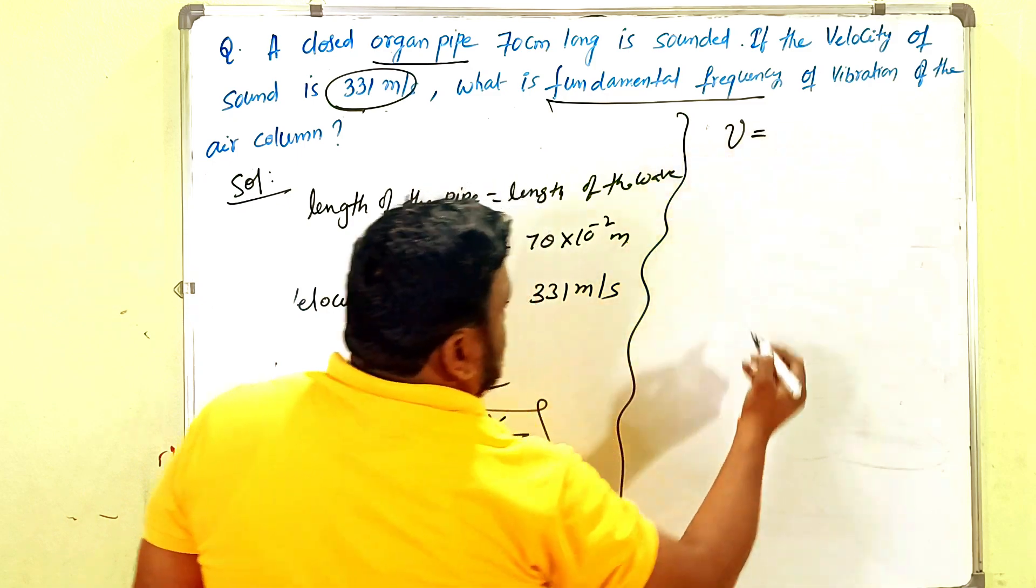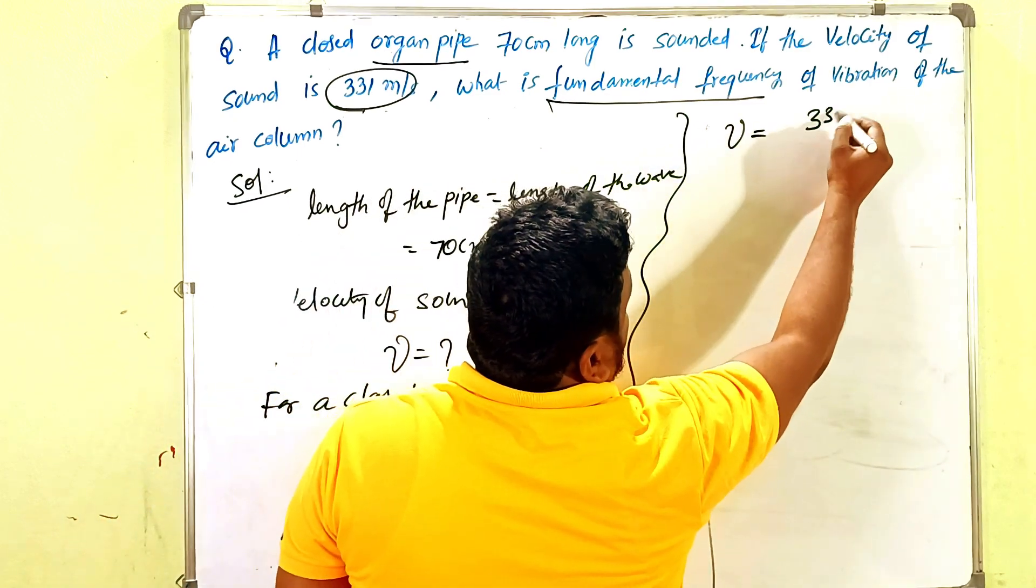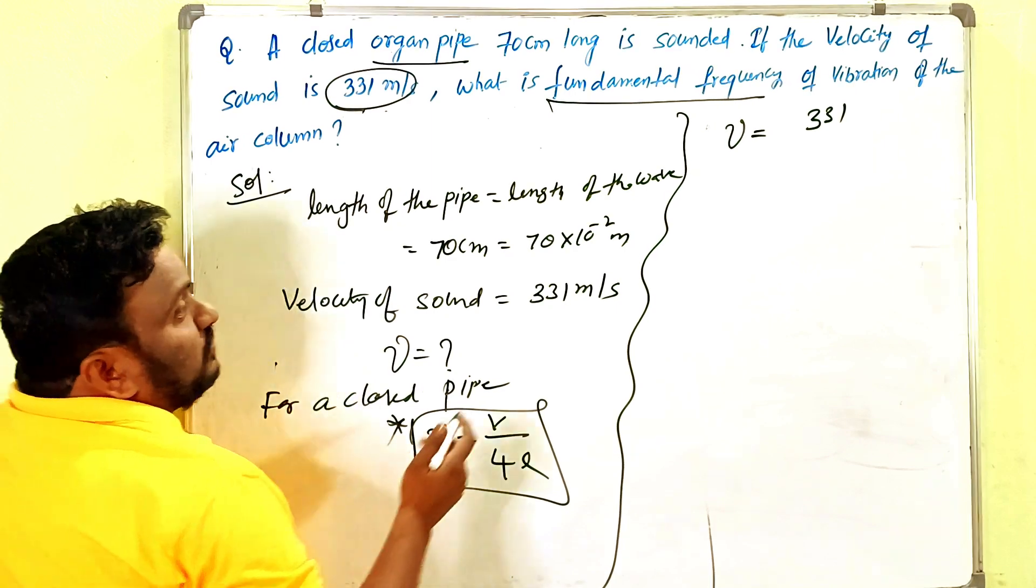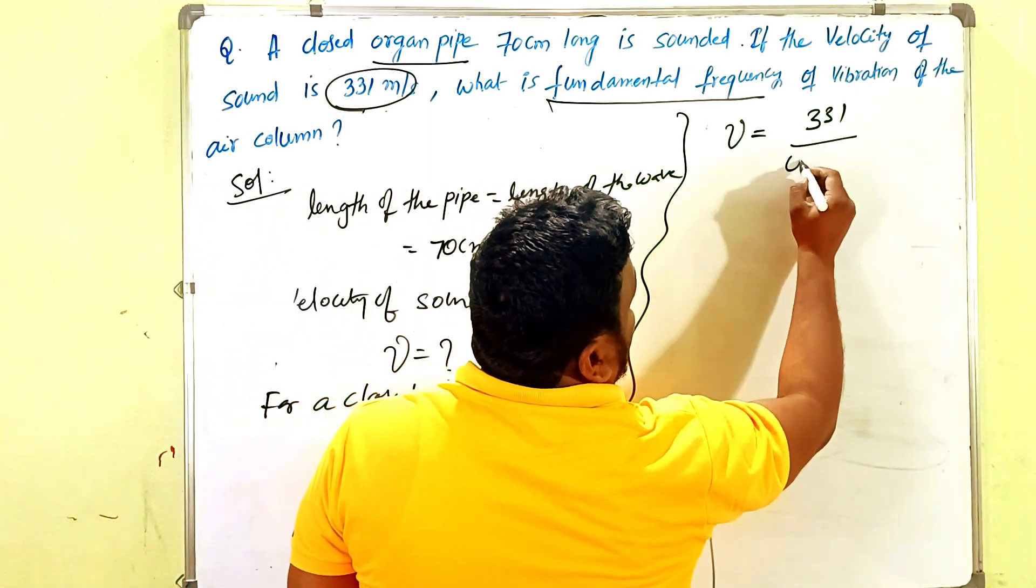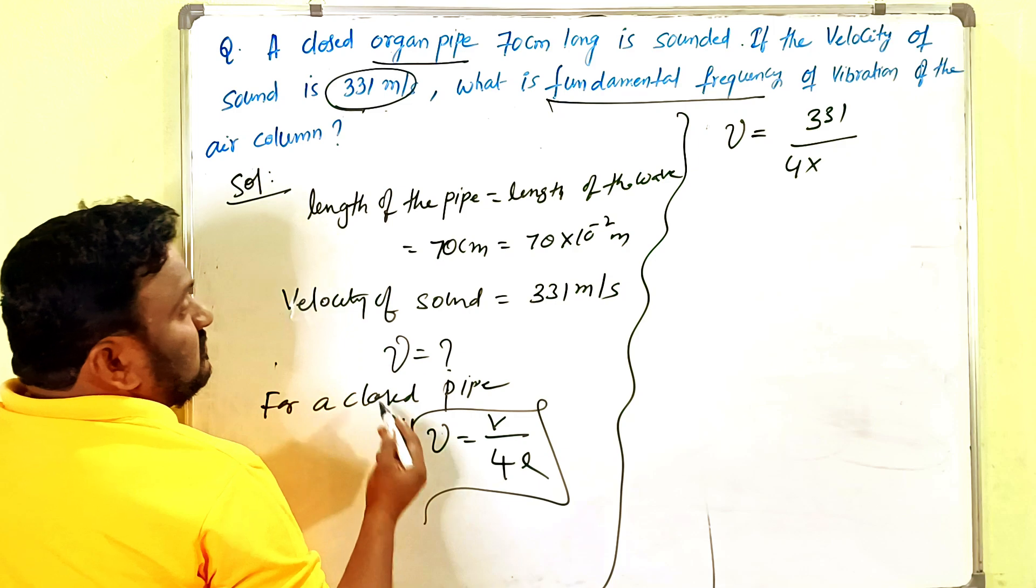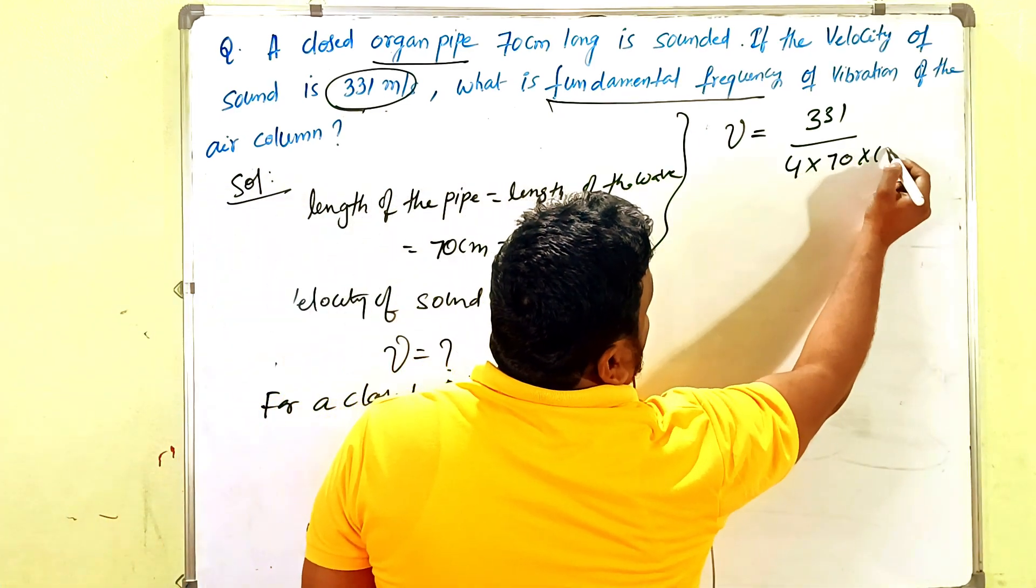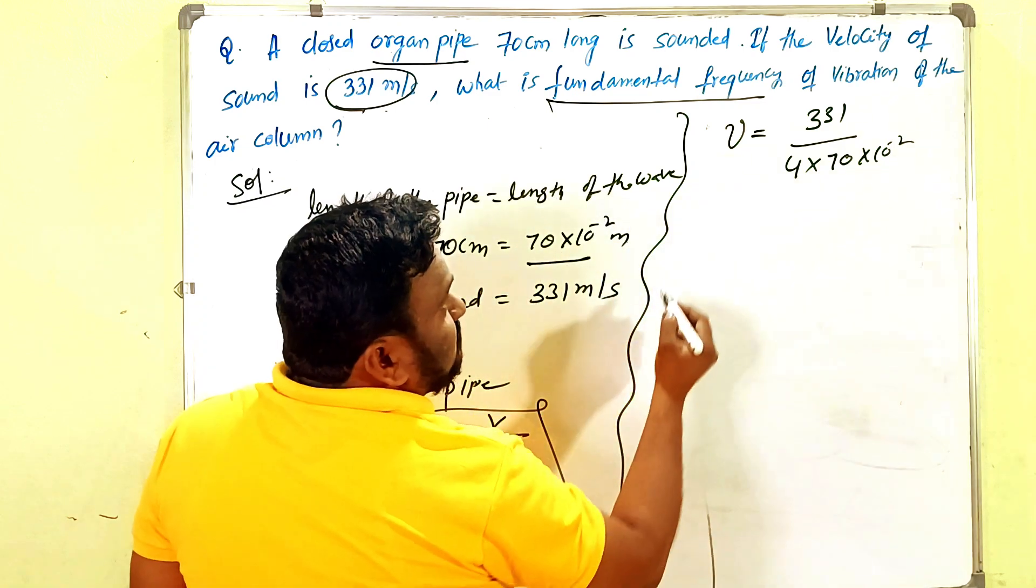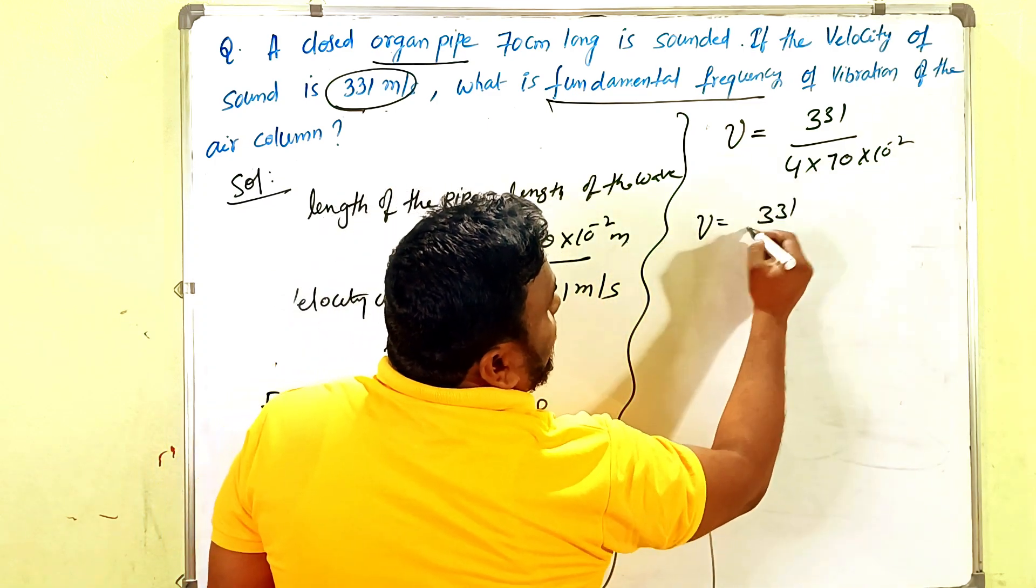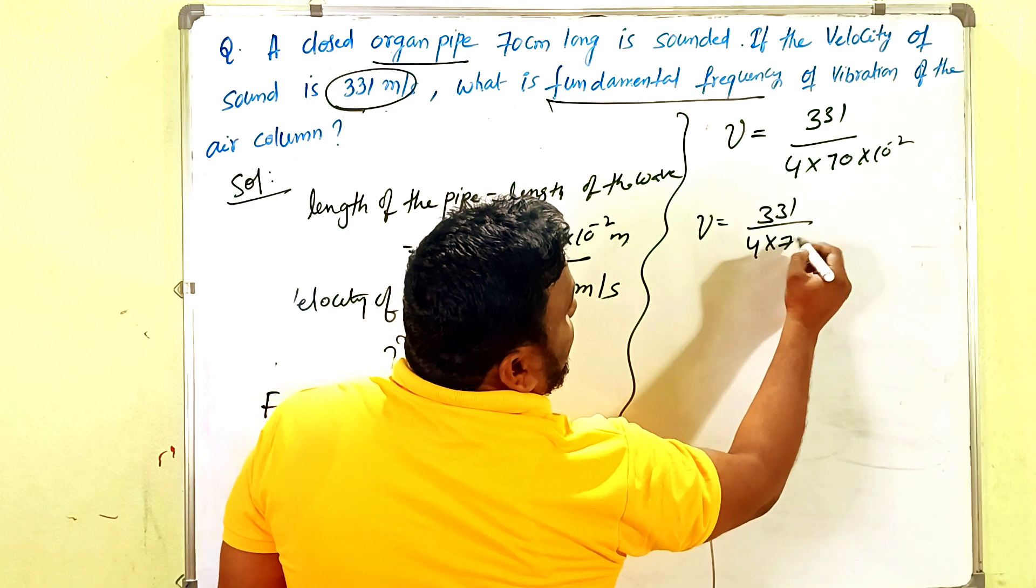ν equals 331 meters per second divided by 4 times L. What is L? 70 × 10^-2 meters. So we can write ν = 331/(4 × 7 × 10^-1).